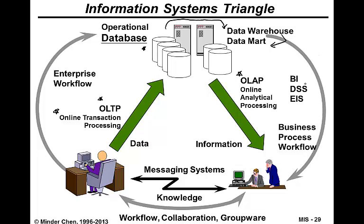This type of system comes with different names — sometimes called business intelligence, decision support system, or executive information system. The information generated here sometimes needs to be sent back and forth among different work units within the organization. That's part of the so-called workflow system. There's also a lot of communication and collaboration among people at different levels, where workflow and collaboration systems, or so-called groupware, can be very helpful.